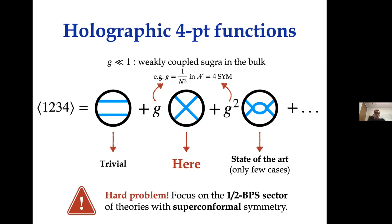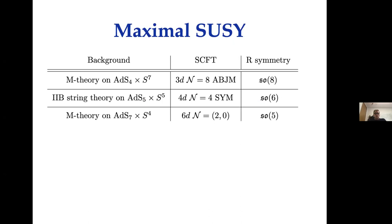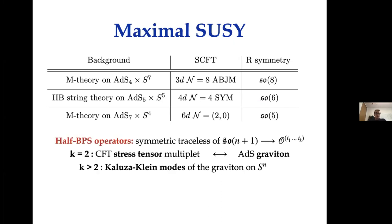We consider theories with superconformal symmetry and focus on the half-BPS sector of operators. If you have these requirements you're immediately led to consider theories with maximal supersymmetry. The half-BPS operators are in the symmetric trace representations of some SO(N+1) groups, labeled by an integer k which is the rank of these representations. For k=2, the half-BPS multiplet is the stress tensor multiplet, dual in AdS to the supergraviton multiplet, while for k>2 these operators correspond to Kaluza-Klein modes of the graviton on the sphere.